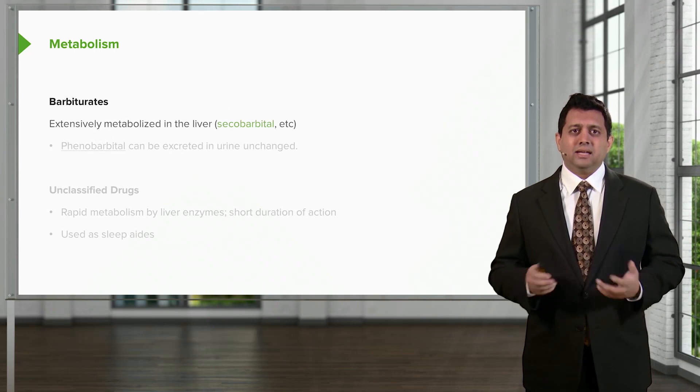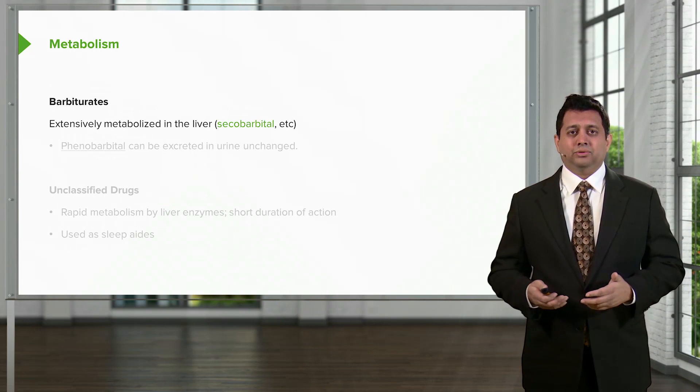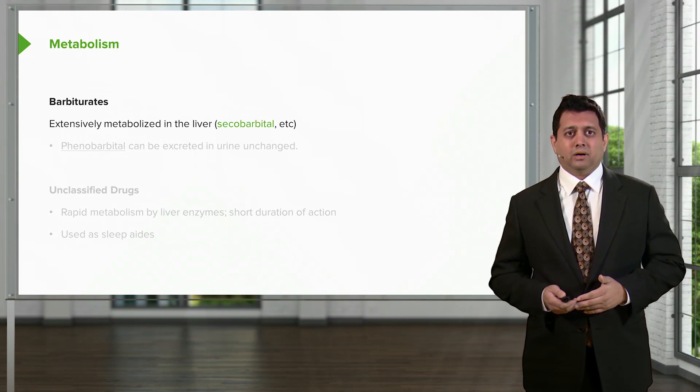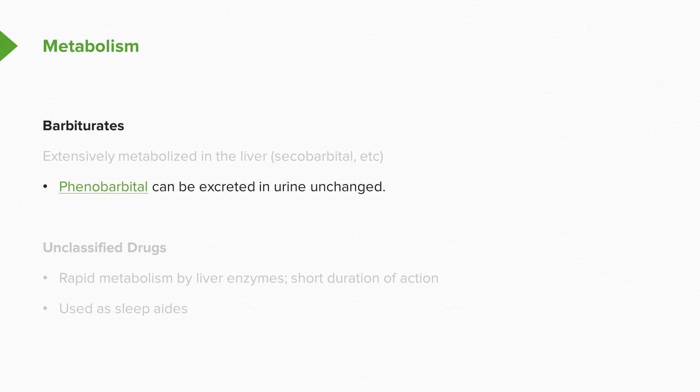Barbiturates are extensively metabolized in the liver. An example or a prototypical drug is the short acting secobarbital. Phenobarbital can be excreted in the urine unchanged. Phenobarbital is a longer acting version and is often used in patients who have epilepsy.